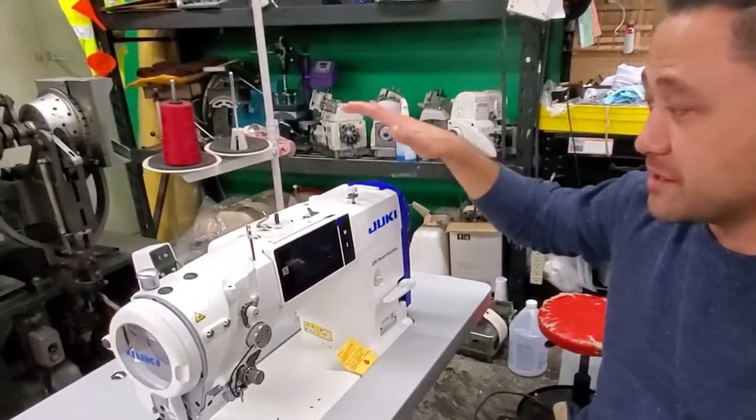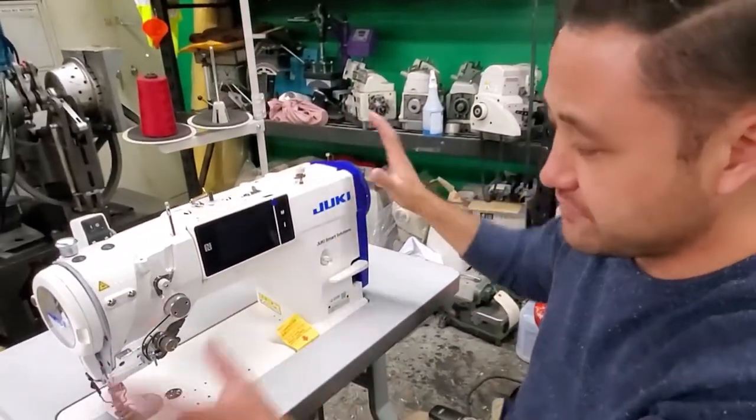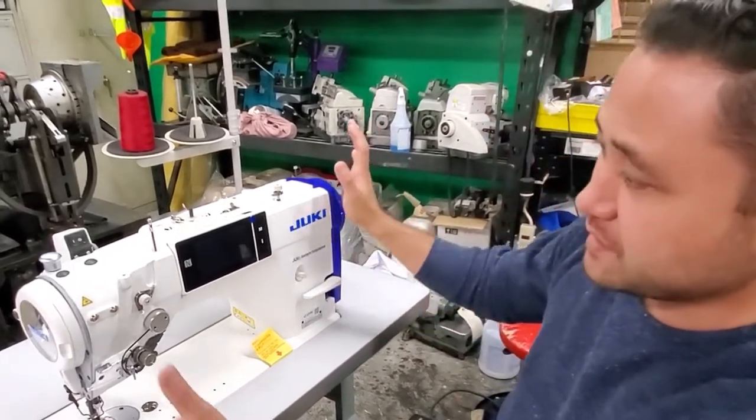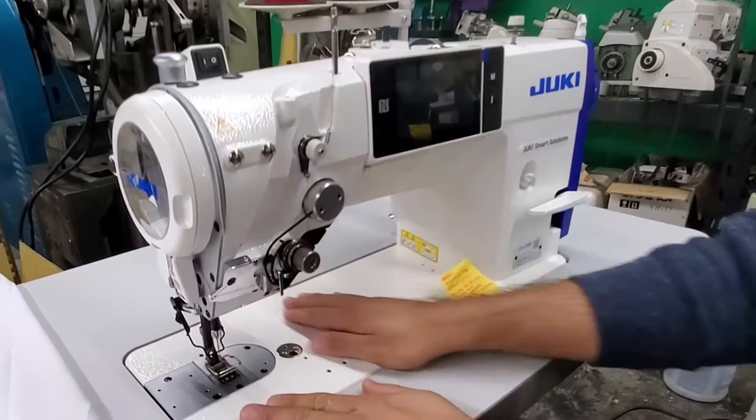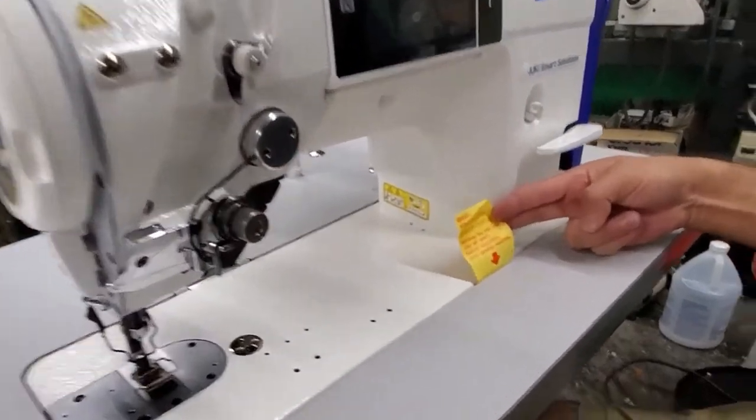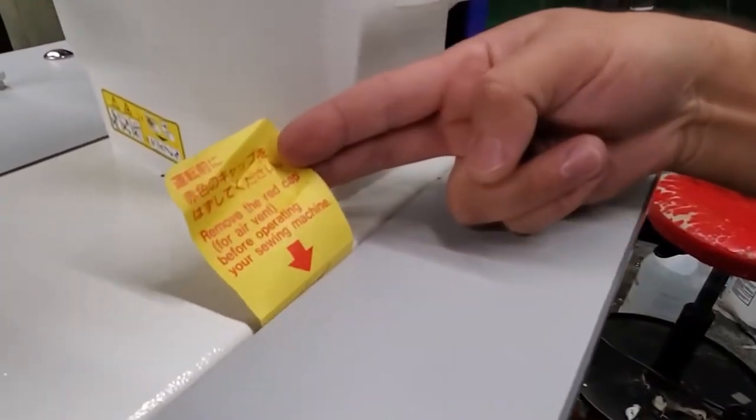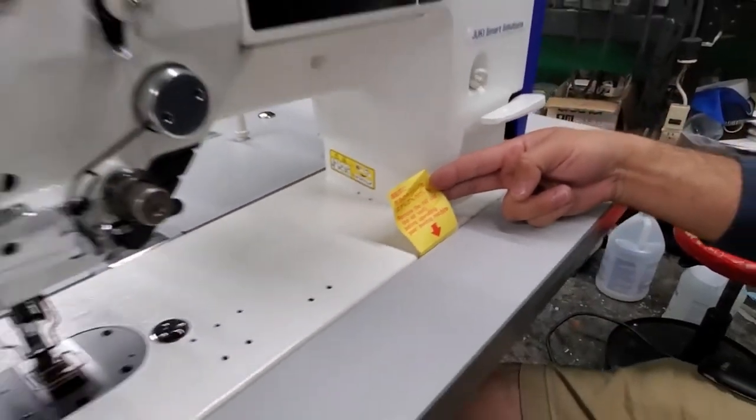So this is a brand new machine. Out of the box, we have it fully assembled. A couple of things that you have to know. You're going to have tape covering certain areas of the machine. You have this little air vent cap. Definitely you want to take that off before you start running the machine.